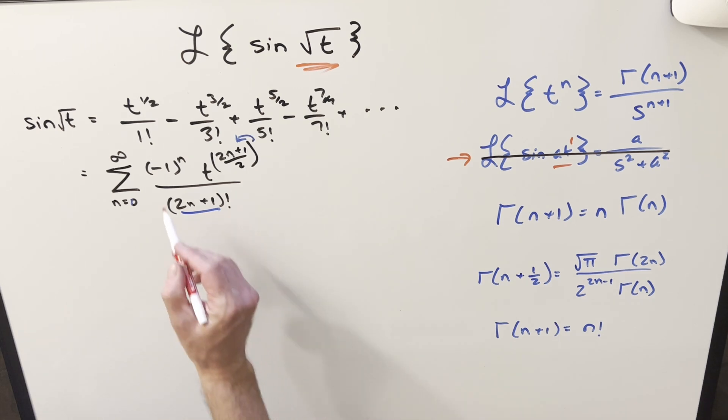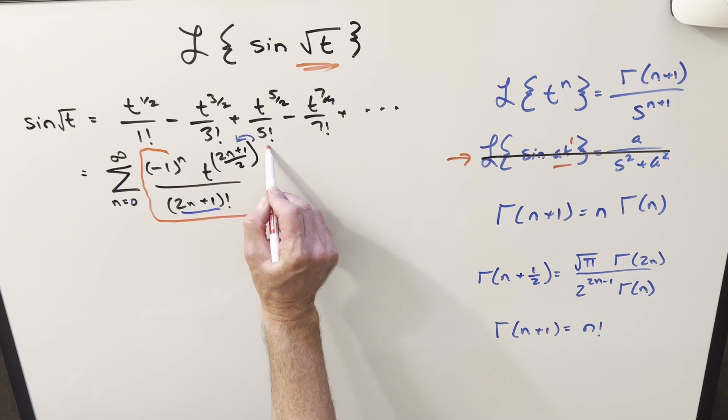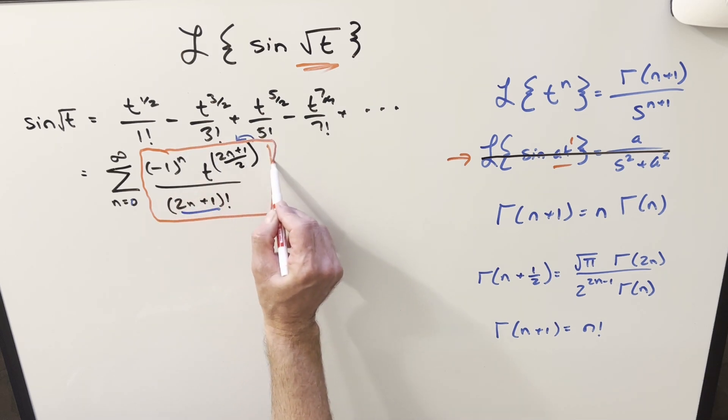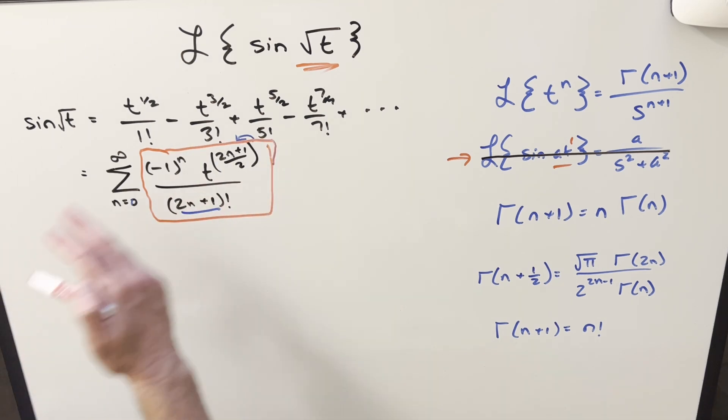So what I want to do is let's just focus on finding Laplace transform of any one of these generic terms. We're not going to have a problem swapping the Laplace transform with the summation later on. Just the way we would do it with an integral, we can swap the order. When we have the power series, we have the absolute convergence. So we can interchange these things and be okay.